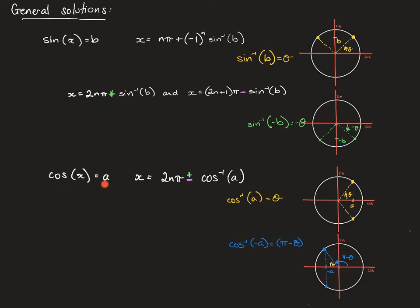The general solution for cosine is actually two equations written in short form with a plus-minus in the middle — that is, 2nπ plus inverse cos of a, as well as 2nπ minus inverse cos of a. You need to be careful again with your inverse cos of a.